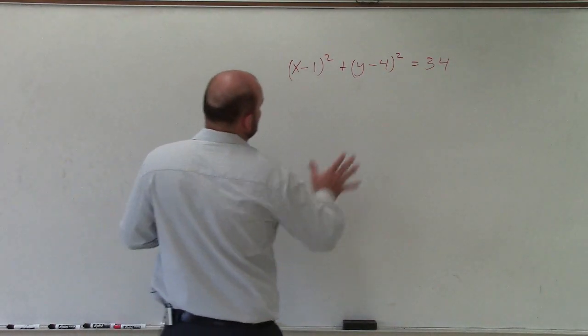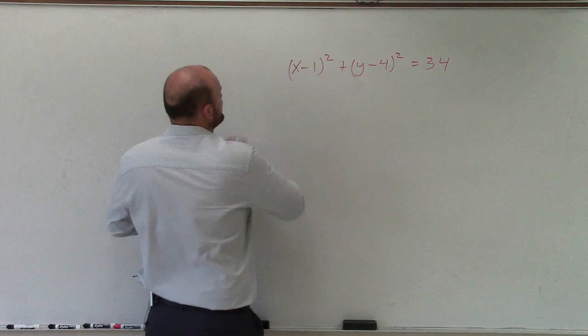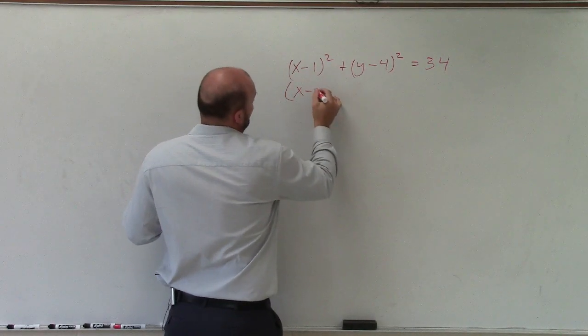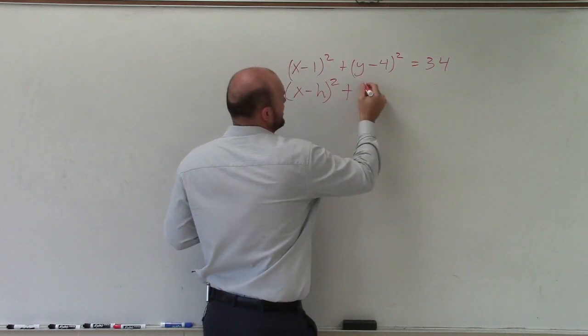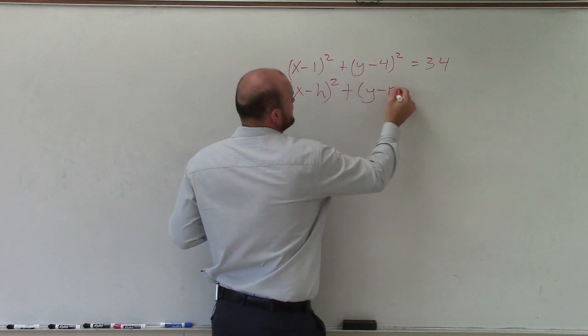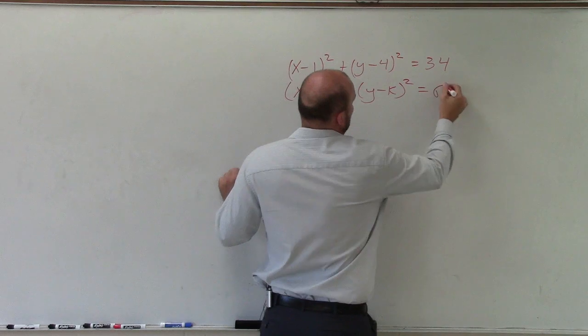Since I have a perfect circle, the equation for a circle would be (x - h)² plus (y - k)² equals r².